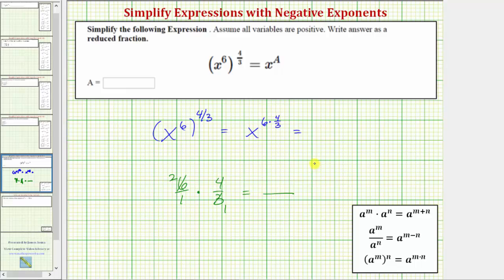And now we multiply. In the numerator, we have two times four, which equals eight. In the denominator, we just have one times one, which equals one.